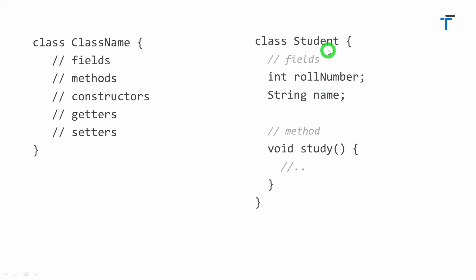Look at this example. I have a class for Student having two different fields — roll number and name — and having one method called study.